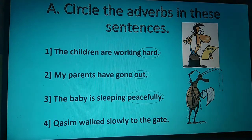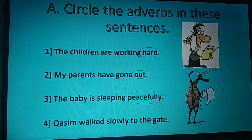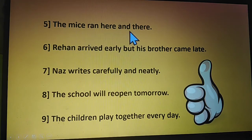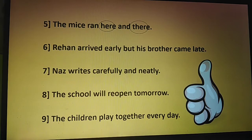Now the fourth sentence: Qasim walked slowly to the gate. How did Qasim walk? We get the answer — slowly. So slowly is the adverb; it describes the verb walk. Question number 5: the mice ran here and there. Where did the mice run? We get the answer — here and there. There are two adverbs: here and there. They describe the verb ran. Please circle these two words.